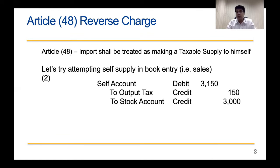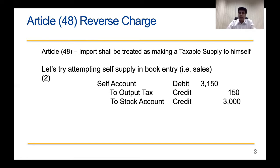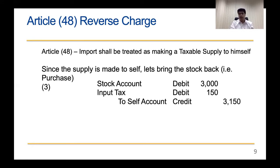Now, the law says to make a supply to yourself. So we pass a sales entry: Self Account (Receivable) debit 3,150, Output Tax credit 150, and Stock or Sales account credit 3,000. This mirrors exactly the sales accounting entry we reviewed earlier — just copy-pasted into this transaction. At this point, the stock is technically zero since we've sold to ourselves.